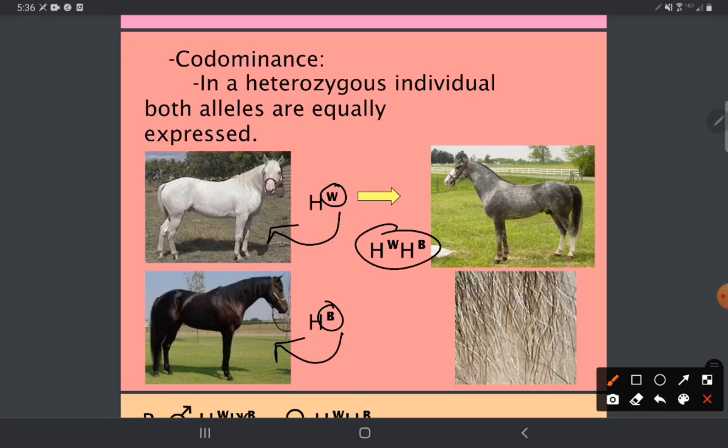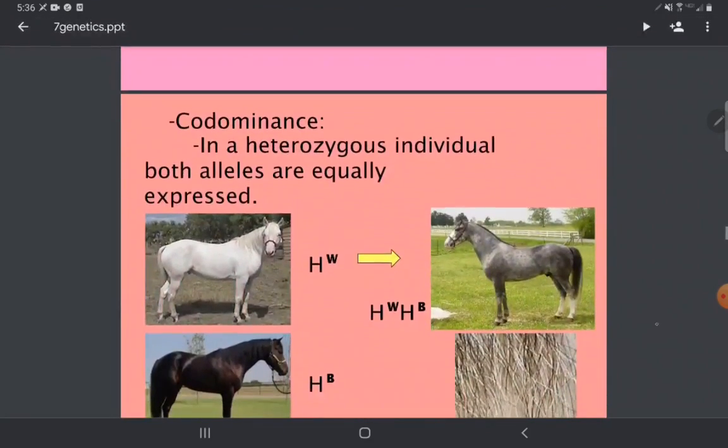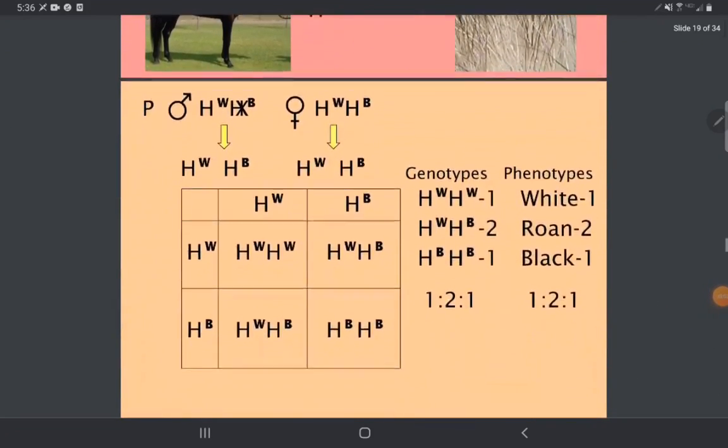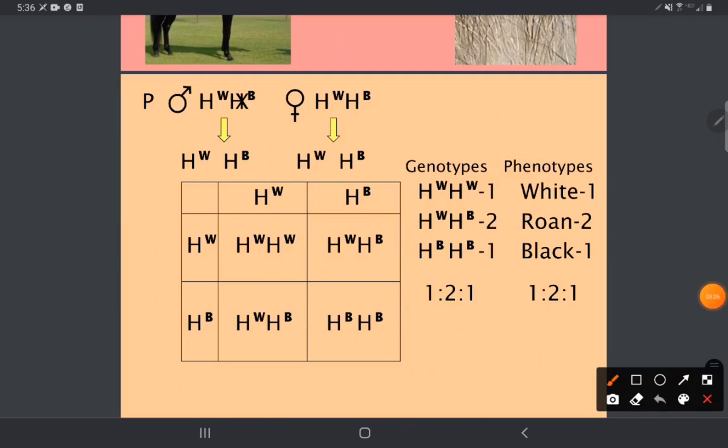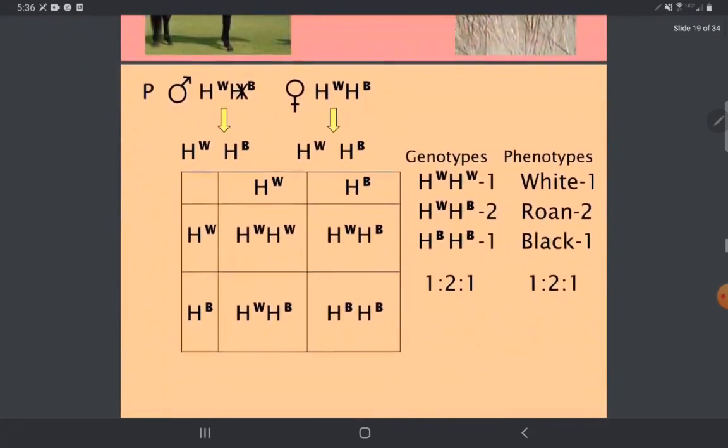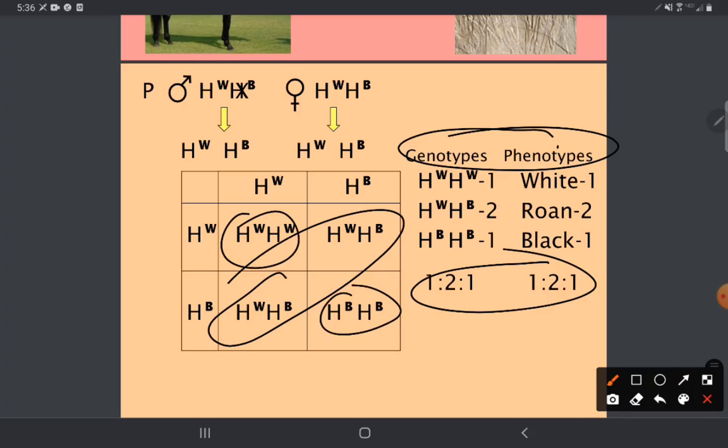This creates a unique heterozygote. If we were to cross two of these, this would be our results. In this monohybrid cross, we would get the same type of results that we got with incomplete dominance.